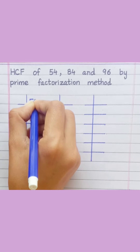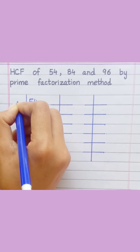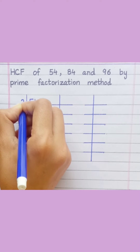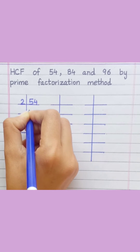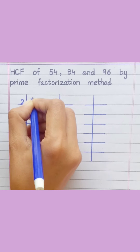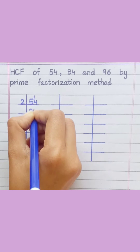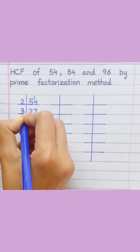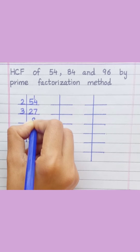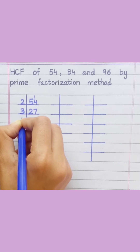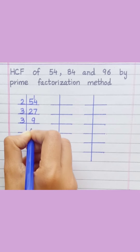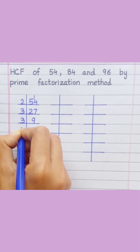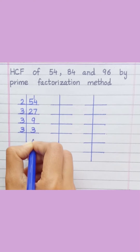54: 2 twos are 4, 2 sevens are 14, 3 nines are 27, 3 threes are 9, 3 ones are 3.